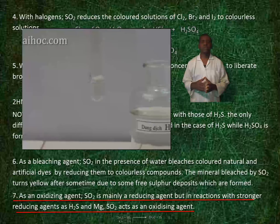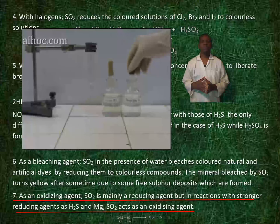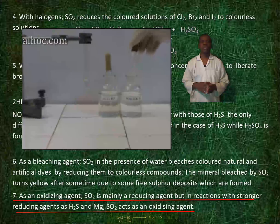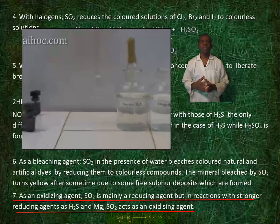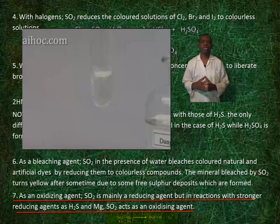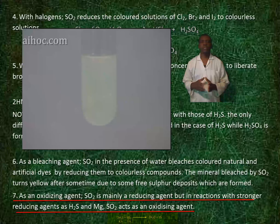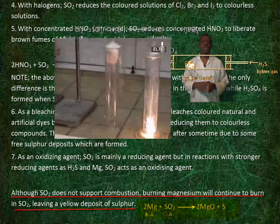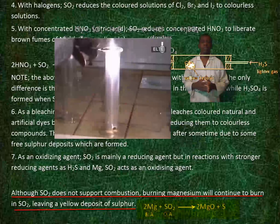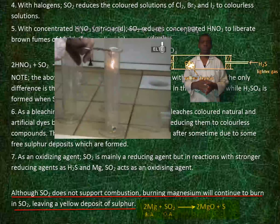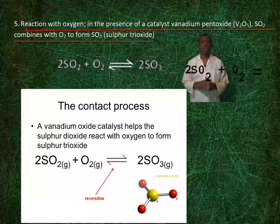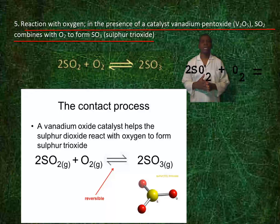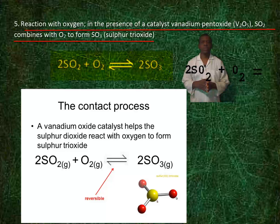As an oxidizing agent, sulfur dioxide is mainly a reducing agent, but in reactions with stronger reducing agents such as hydrogen sulfide and magnesium, sulfur dioxide acts as an oxidizing agent. Although sulfur dioxide does not support combustion, burning magnesium will continue to burn in sulfur dioxide, leaving a yellow deposit of sulfur. In the presence of a catalyst, vanadium pentoxide, sulfur dioxide combines with oxygen to form sulfur trioxide.